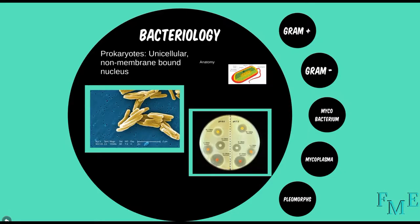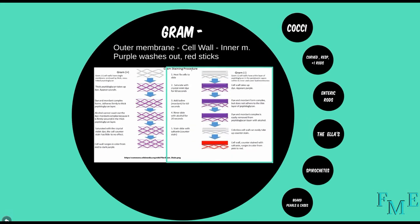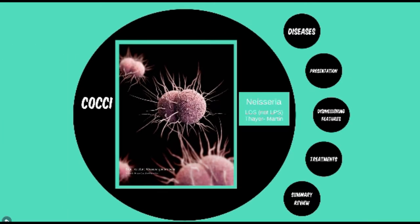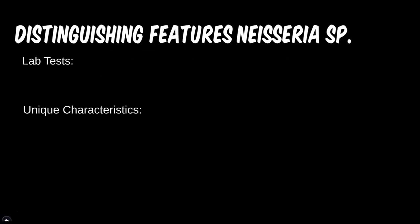If you have completed the first two modules you should be fairly familiar with the many types of distinguishing features seen in a variety of microbes. First let's take a look at the features that are unique to help separate the Neisseria genus from other organisms, then we'll look at the differences between the two species of medical relevance.